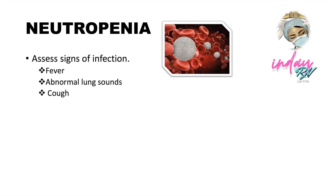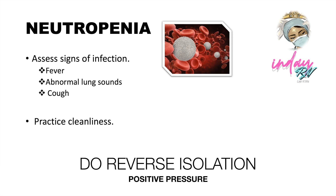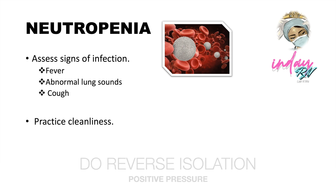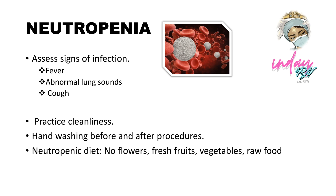The next side effect is neutropenia — again affecting the blood. Always assess for signs of infection like fever, abnormal lung sounds, and cough. Practice cleanliness and place the patient in reverse isolation, which involves positive pressure rooms, hand washing before and after procedures, and a neutropenic diet — meaning no flowers, fresh fruits, vegetables, or raw foods.